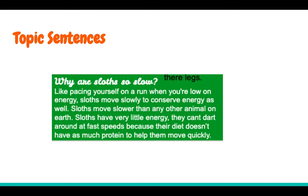Let's take a look at another example. This paragraph is titled Why Are Sloths So Slow? And the topic sentence is: Like pacing yourself on a run when you're low on energy, sloths move slowly to conserve energy as well. So from the topic sentence I know what it's mostly about — the main idea of this paragraph — that it's going to be about why sloths are slow and how they move slowly to conserve energy. Then after the topic sentence it says: Sloths move slower than any other animal on earth. Sloths have very little energy. They can't dart around at fast speeds because their diet doesn't have much protein to help them move quickly. So again, that topic sentence introduced to us what that paragraph is going to be mostly about — the main idea.